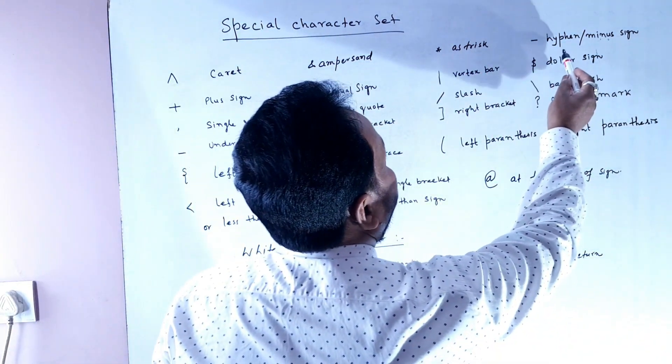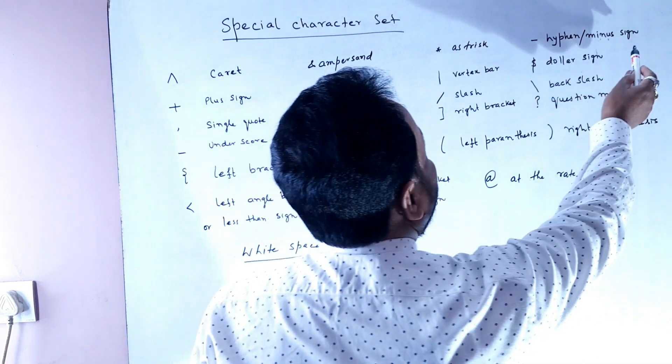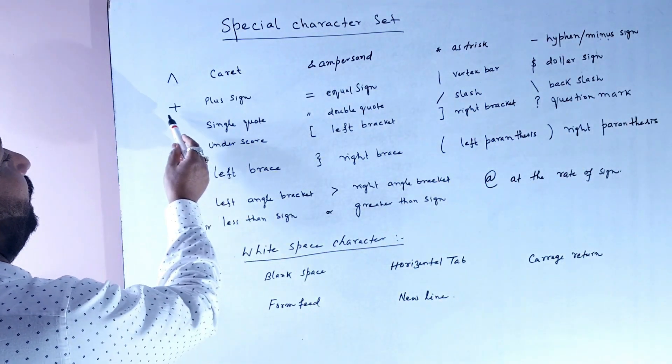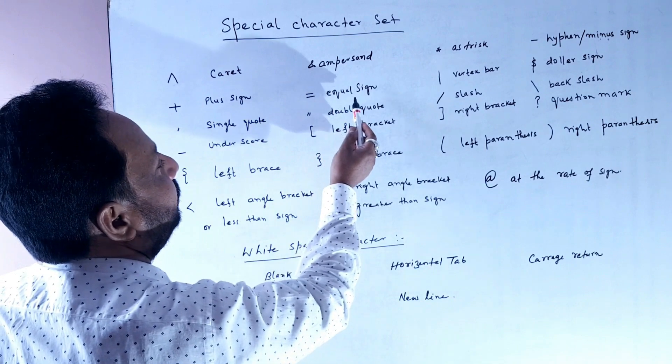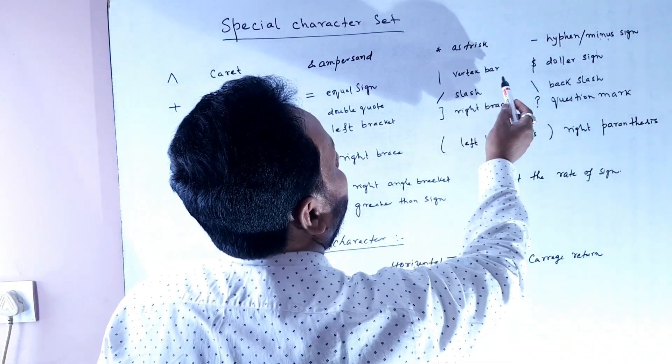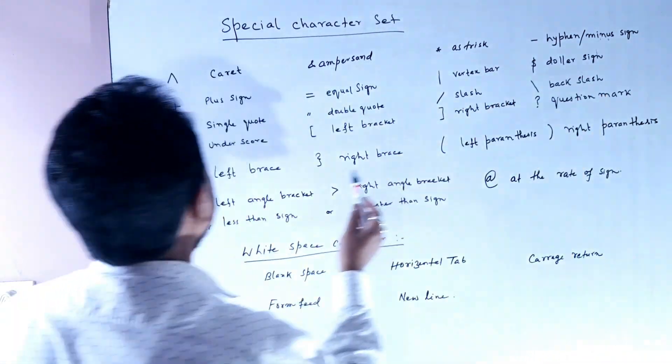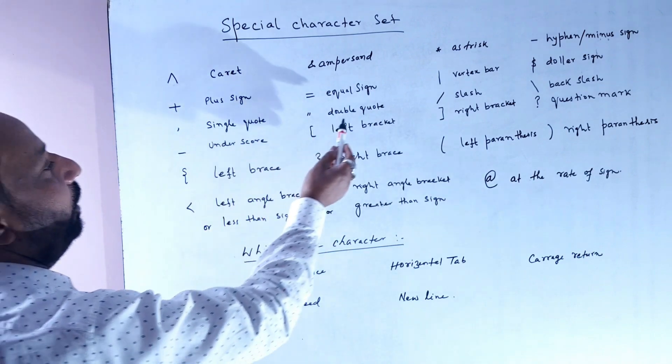Additional special characters include asterisk sign, hyphen, oblique, minus sign, plus sign, equal sign, vertical bar, dollar sign, single quote, and double quote.